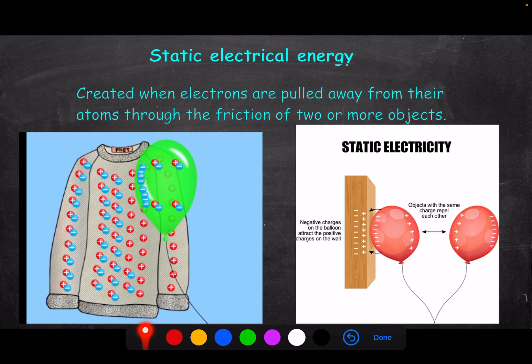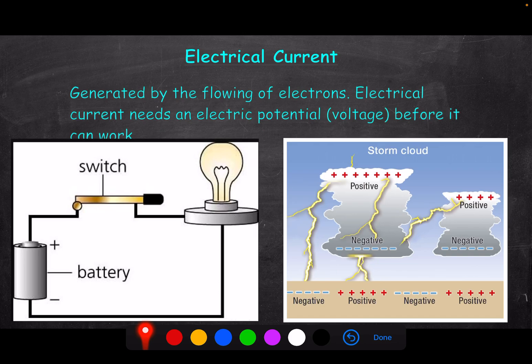Electric current is generated by the flowing of electrons — when electrons flow we have electrical current. In static electricity they do not flow, which is why we call it static, meaning not moving. Current needs an electric potential — a voltage — as a pushing force to get the electrons going, otherwise they go nowhere.